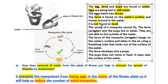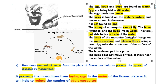The young of a mosquito cannot fly. The larvae, also called wrigglers, and the pupa live in water. They are not able to live outside of the water. The larvae of the mosquito, the wriggler, hangs on the water's surface and takes in air using a breathing tube that sticks out of the surface of the water.